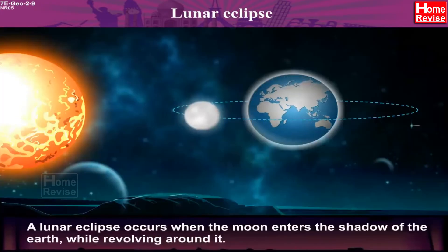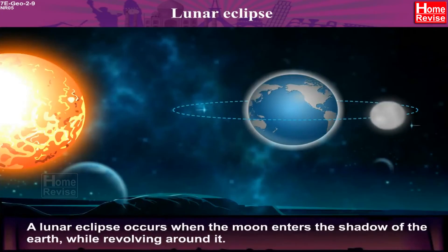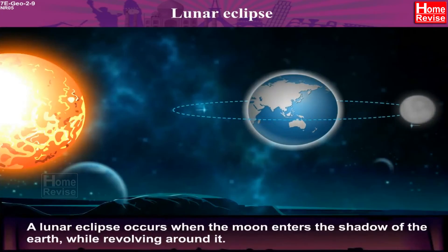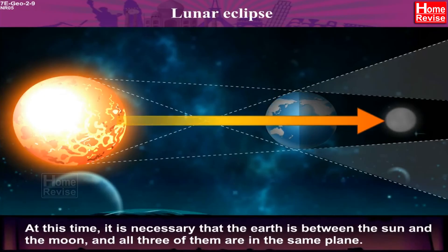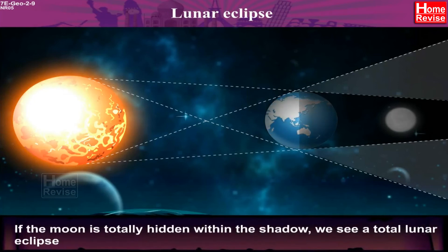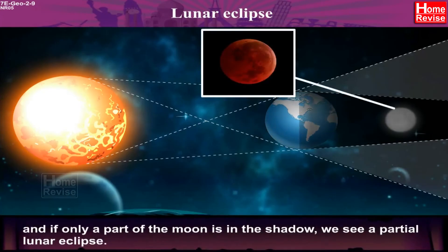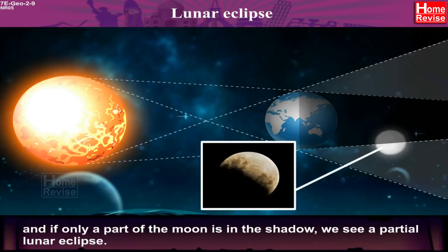Lunar Eclipse: A lunar eclipse occurs when the Moon enters the shadow of the Earth while revolving around it. At this time, it is necessary that the Earth is between the Sun and the Moon and all three of them are in the same plane. On a Full Moon day, the Moon's path of revolution passes through the thick shadow of the Earth. If the Moon is totally hidden within the shadow, we see a total lunar eclipse, and if only a part of the Moon is in the shadow, we see a partial lunar eclipse.